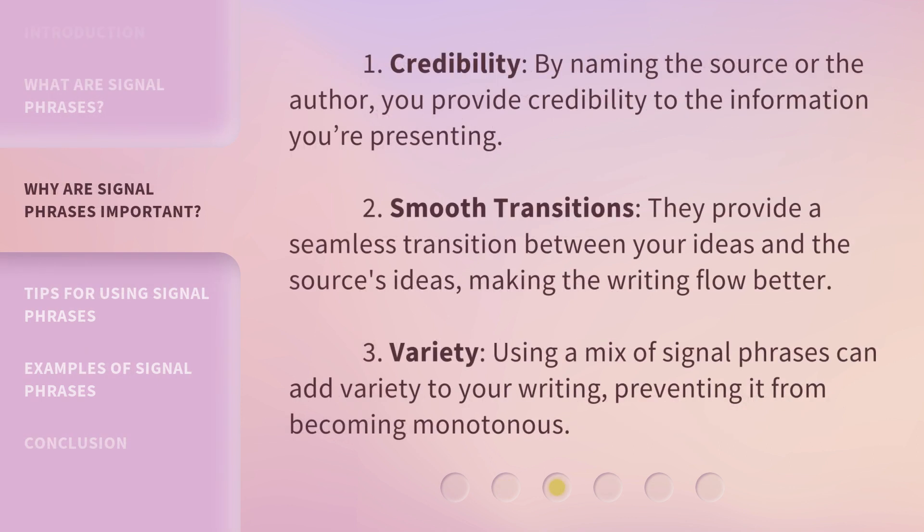There are three key benefits of signal phrases. First, credibility: by naming the source or the author, you provide credibility to the information you're presenting. Second, smooth transitions: they provide a seamless transition between your ideas and the source's ideas, making the writing flow better. Third, variety: using a mix of signal phrases can add variety to your writing, preventing it from becoming monotonous.